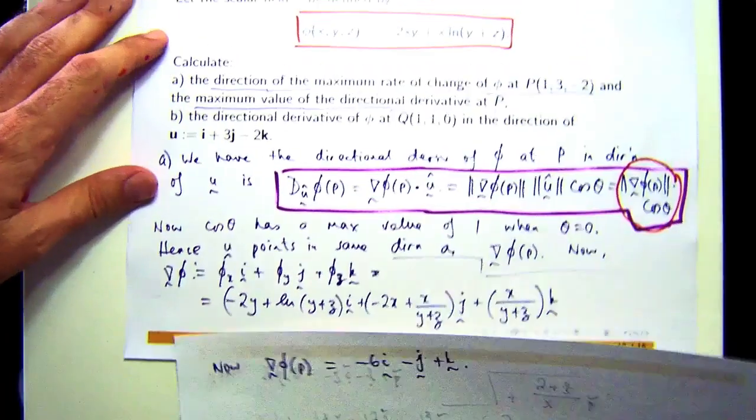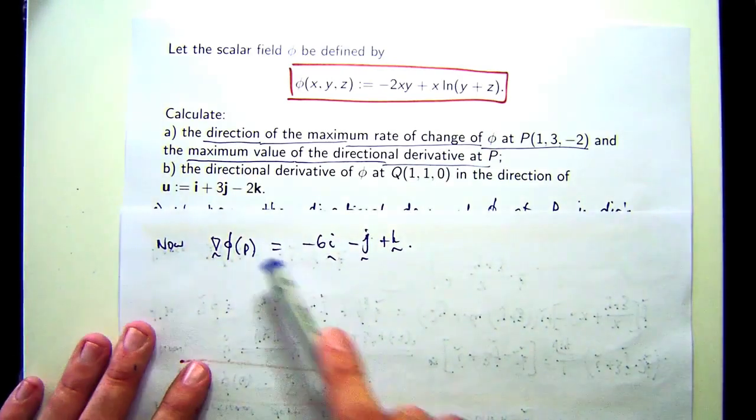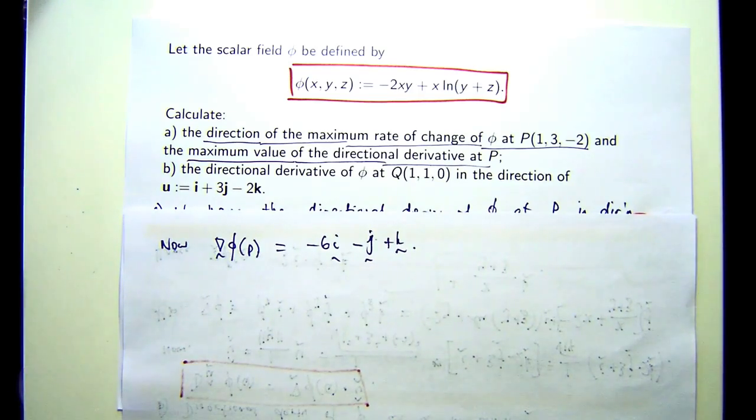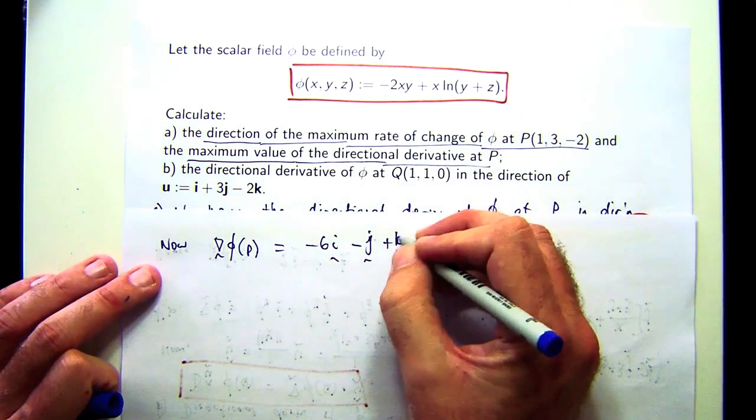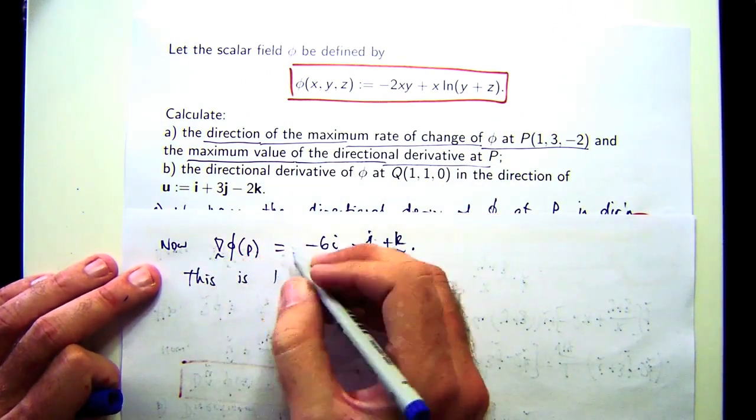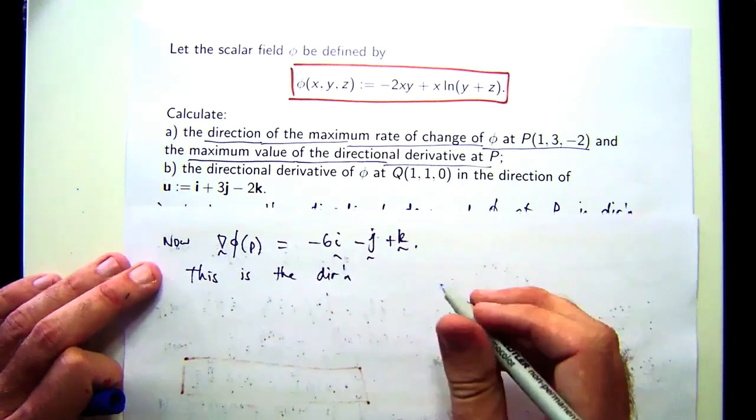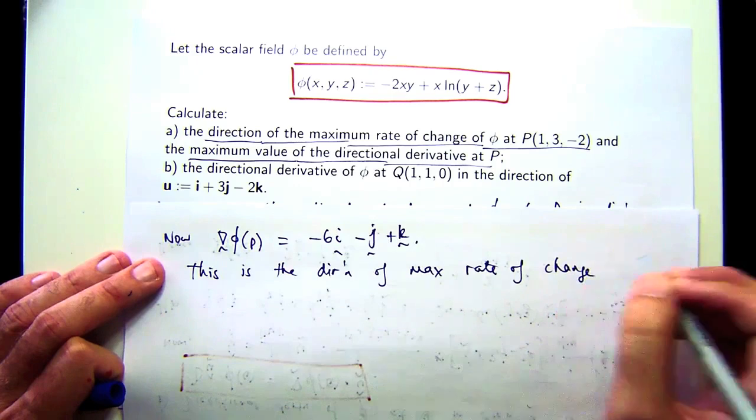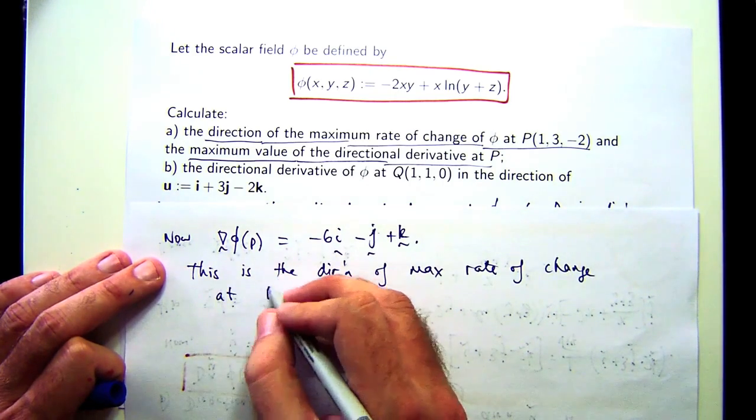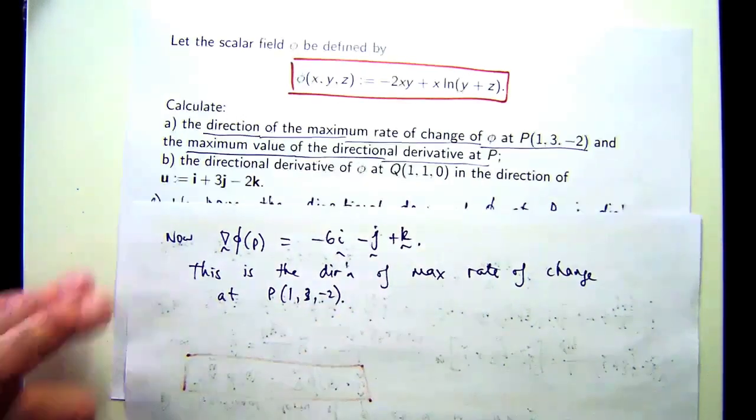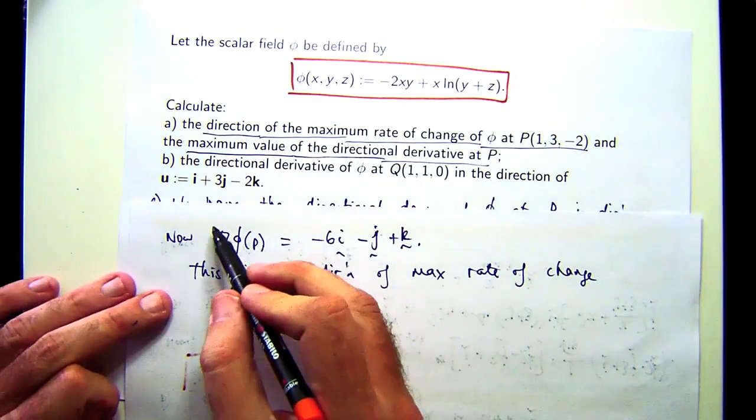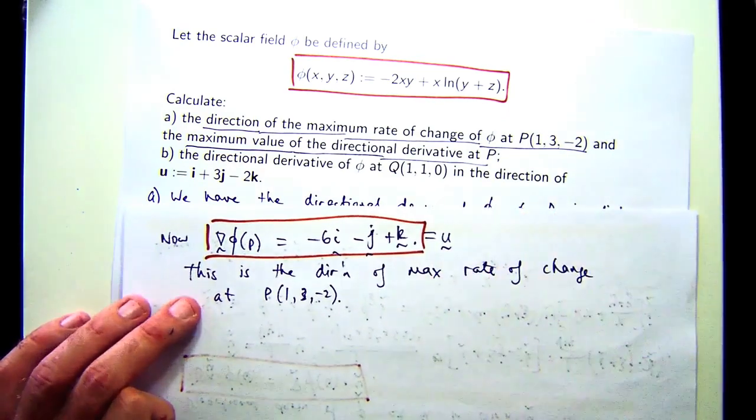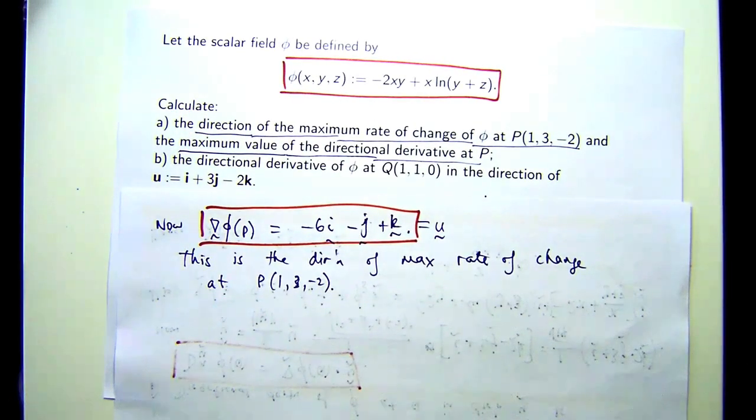So what, remember, we're looking for a direction here, given by a vector. This is your answer. You're looking for a direction, your answer will be a vector. So if I wanted to write a concluding statement here, this is the direction of max rate of change at P. So if you wanted to put an extra little bit in, you would say, okay, that's my u vector.